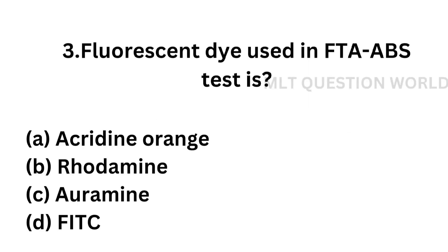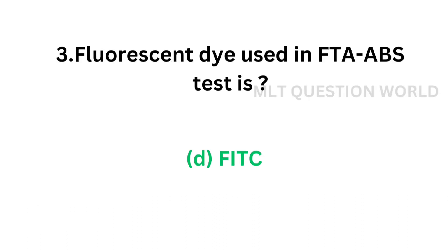Question number 3. Fluorescent dye used in fluorescent treponemal antibody absorption test is: Option A, acridine orange; Option B, rhodamine; Option C, auramine; Option D, FITC or fluorescent isothiocyanate. Which of the following dyes is used in FTA-ABS test? The correct answer is Option D, FITC, that is fluorescent isothiocyanate.